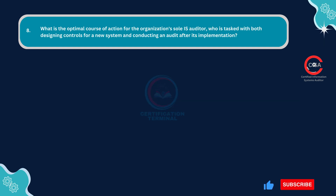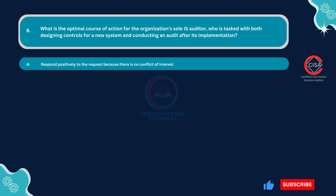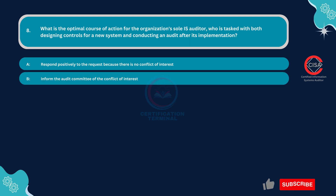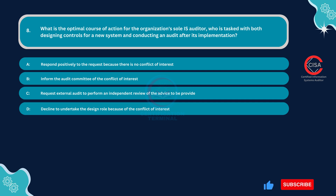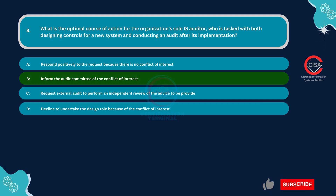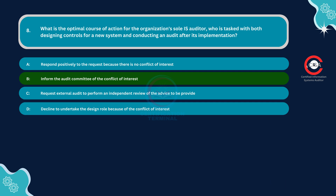Question 8: What is the optimal course of action for the organization's sole IS auditor, tasked with both designing controls for a new system and conducting an audit after its implementation? Option A: Respond positively to the request, because there is no conflict of interest. Option B: Inform the audit committee of the conflict of interest. Option C: Request external audit to perform an independent review. Option D: Decline to undertake the design role because of the conflict of interest. The correct answer is Option B: Inform the audit committee of the conflict of interest.